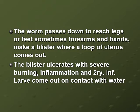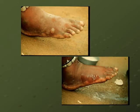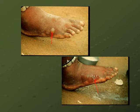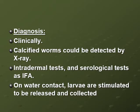The worm passes down to reach the legs or feet, sometimes the forearm and hands, and makes a blister where a loop of the uterus comes out. The blister ulcerates with severe burning, itching, and inflammation, and secondary infection. Sometimes the larvae come out when the patient gets in contact with water. This is a picture of a blister - it ulcerated after a while, and when we pour water on it, a part of the worm comes out for the larvae to be voided outside.